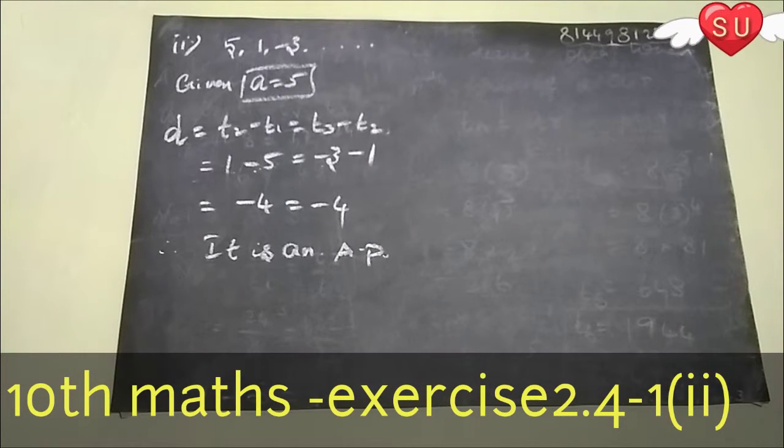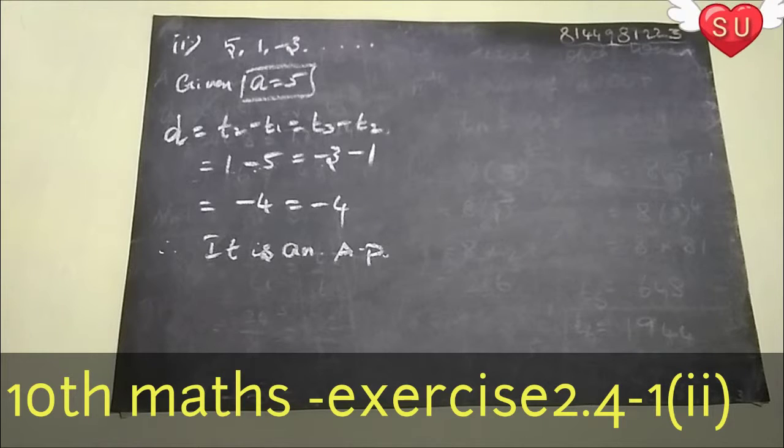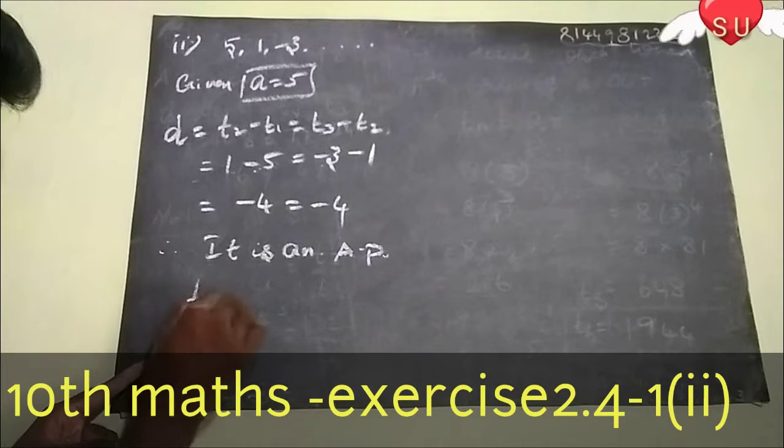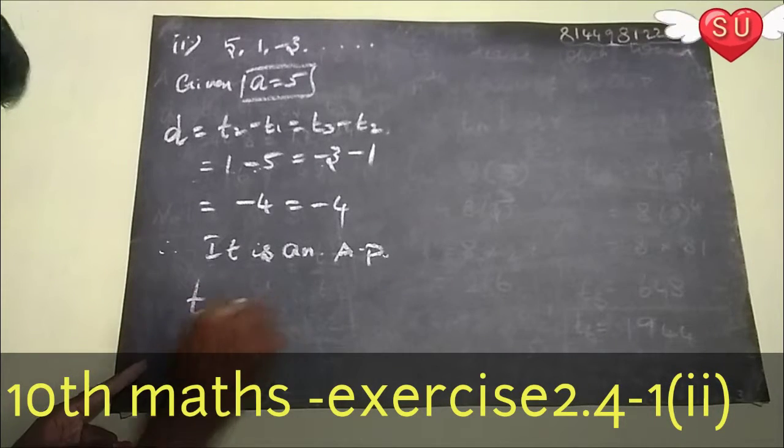So, AP in order formula. AP TN formulas — the Nth term formula. TN equal to a plus (N minus 1) into d.